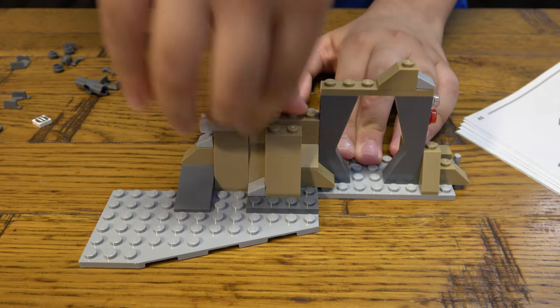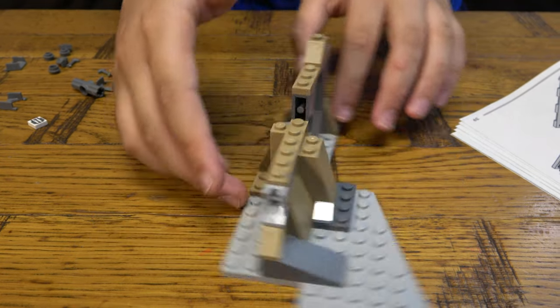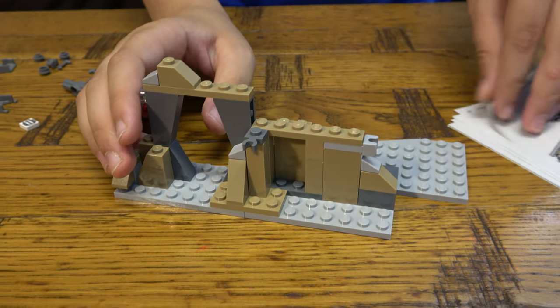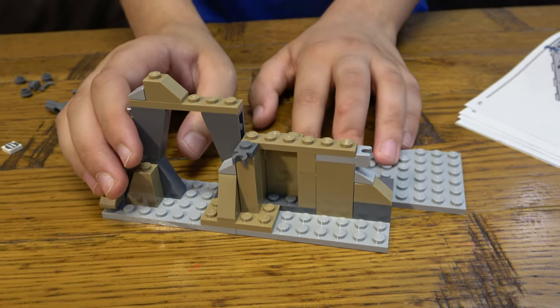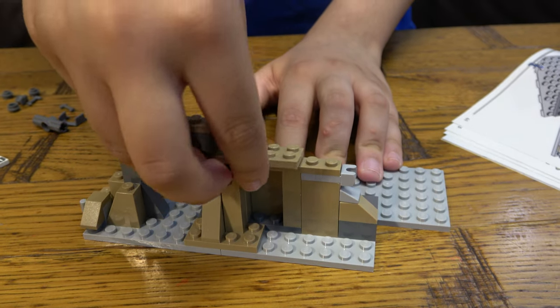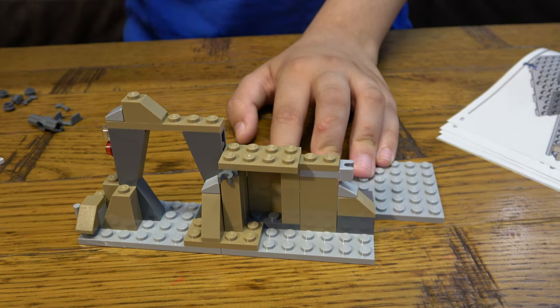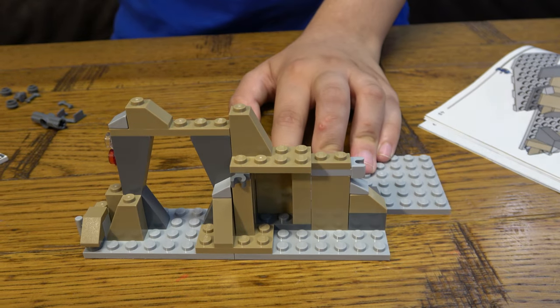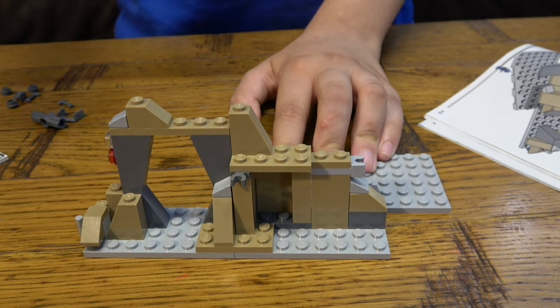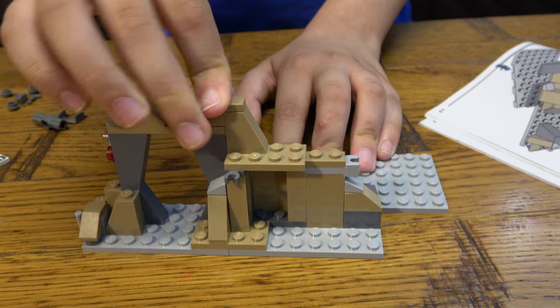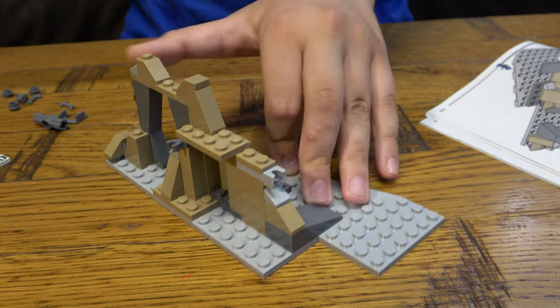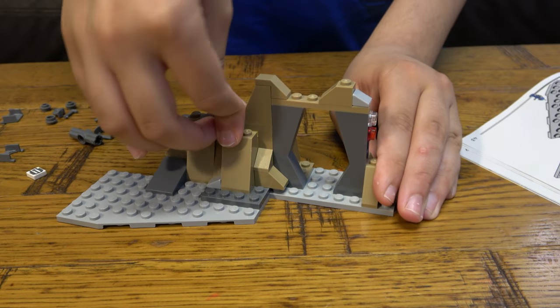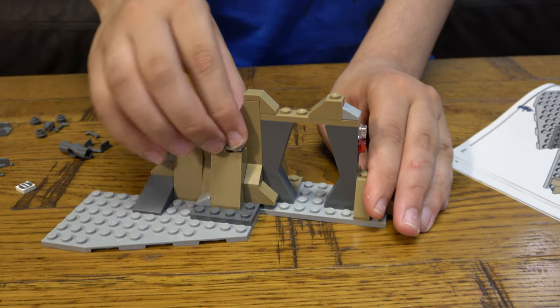After we're going to place that onto there, and then this across. Turn it over here, get this here. Then I guess we can add this on top, and then put a slope. And another one. Then another one. And a stone.